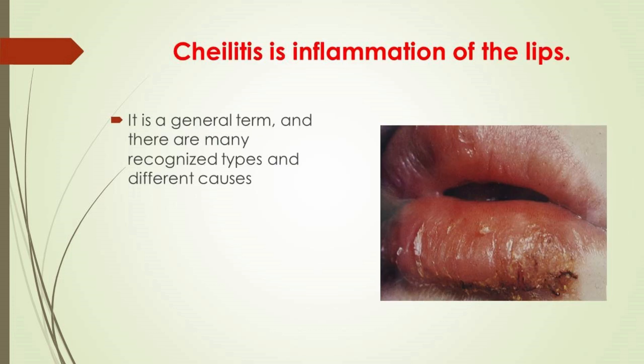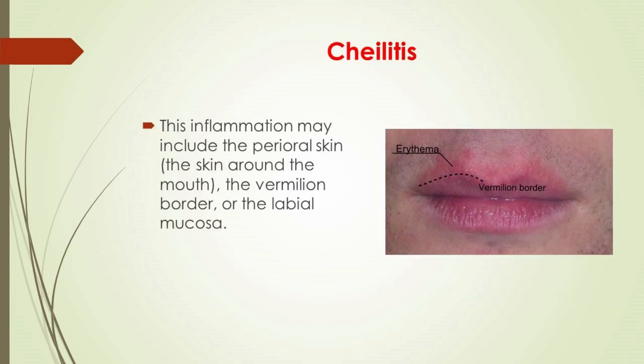Cheilitis is inflammation of the lips. There are many recognized types with different causes, and it can be either acute or chronic. Most cheilitis is caused by exogenous factors such as dryness, chapping, and acute sun exposure. Inflammation may include the perioral skin, the vermilion border, or the labial mucosa. The skin and the vermilion border are more commonly involved, as the mucosa is less affected by inflammatory and allergic reactions.